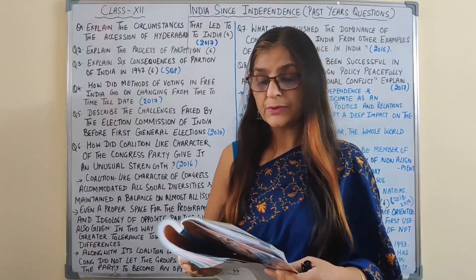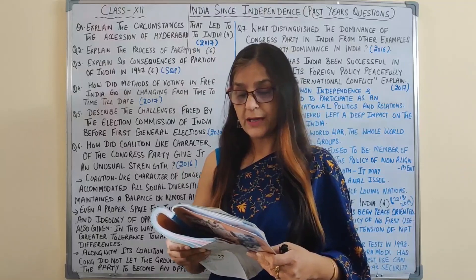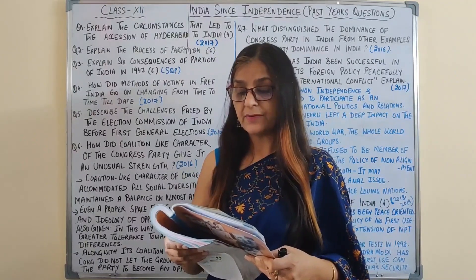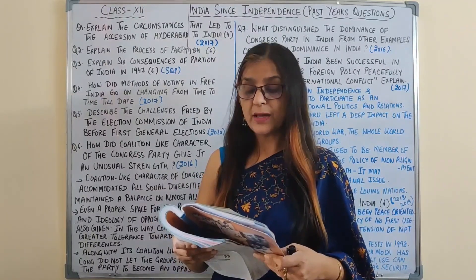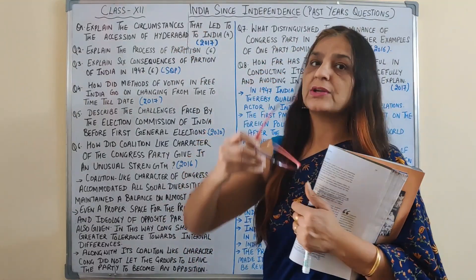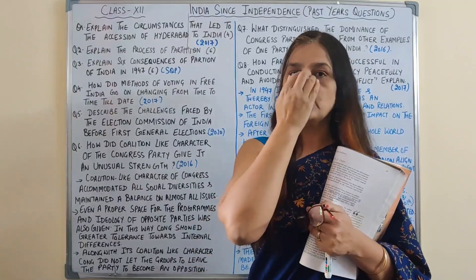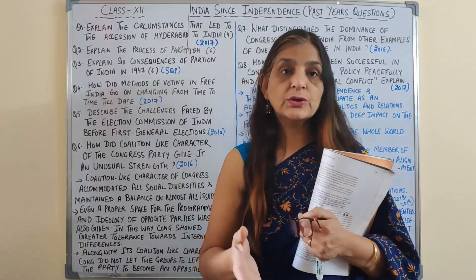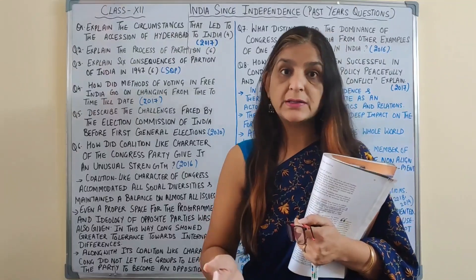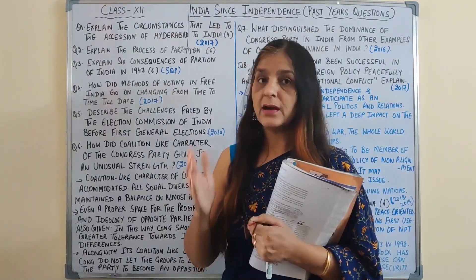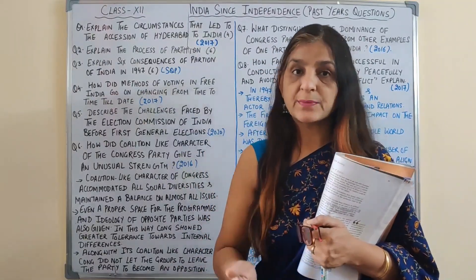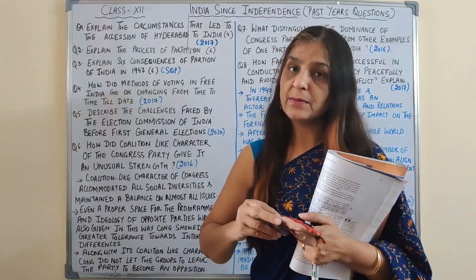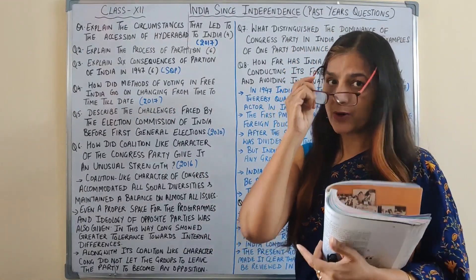The central government had to order the army to tackle the situation. In September 1948, the Indian army moved in to take control of the Nizam's forces, and after a few days of intermittent fighting, the Nizam surrendered. This led to Hyderabad's accession to India. So in summary: Hyderabad's ruler, the Nizam, wanted independent status, but the people under his oppressive rule started a movement, supported by political parties, and then the central government intervened to bring Hyderabad into the Indian Union. This is a very important question — six points are directly answered in the book.